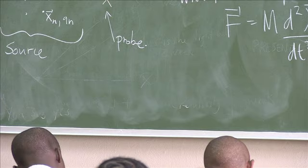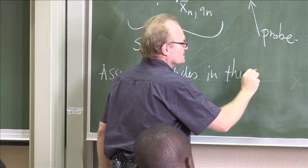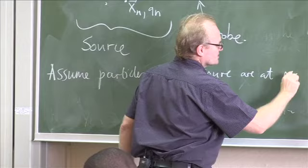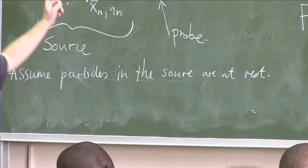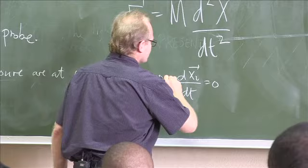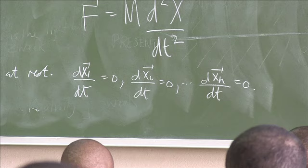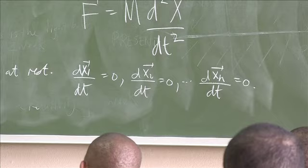Now, we are going to assume the particles in the source are at rest. So that means, if you look at all of these different positions, dx1/dt = 0, dx2/dt = 0, all the way up to dxn/dt = 0. That's just an assumption that we're making for simplicity. So we make this assumption for simplicity.